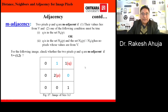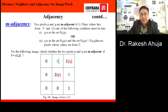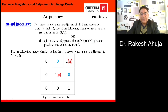To see when p and q are m-adjacent, if we change the value of that pixel to 0, then N4(p) = {0, 0, 0, 0} and N4(q) = {0, 0}. The intersection of N4(p) and N4(q) contains only 0, and 0 does not lie in V. This means p and q are m-adjacent in this particular case.